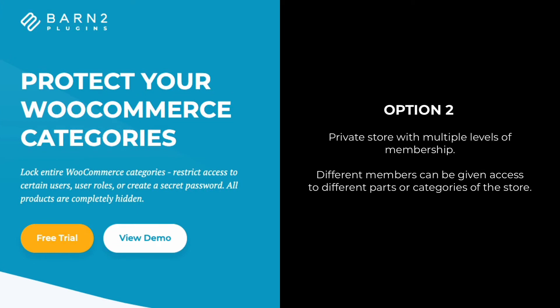Option two is where you need a 100% private WooCommerce store, but with multiple membership levels or tiers. Again, your main web pages can be public, and your WooCommerce store will be private and hidden, but different members can be given access to different parts or categories of the WooCommerce store. If this is the option for you, then you need the WooCommerce Protected Categories plugin. A link to download it is in the description below, along with a detailed written tutorial.